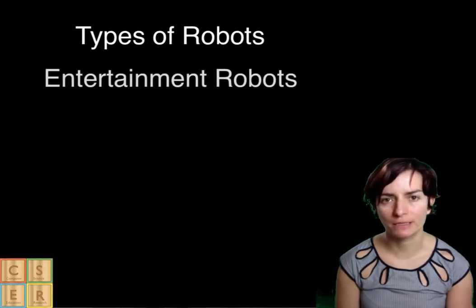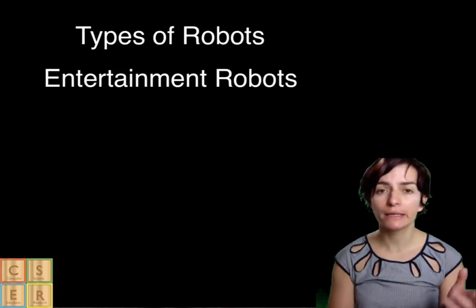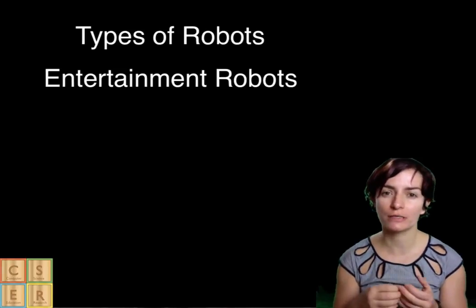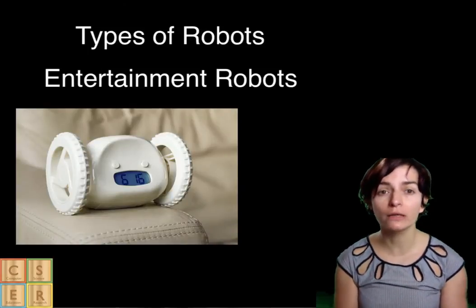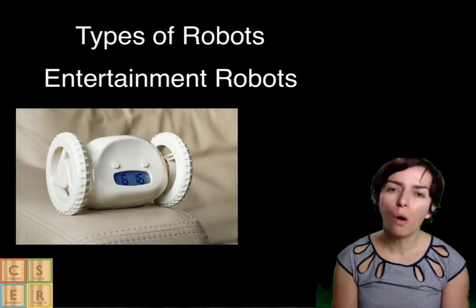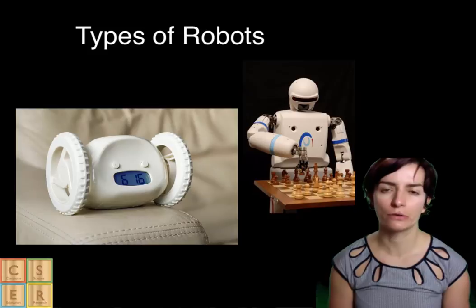Entertainment robots. These are robots used for entertainment. This is a very broad category. It starts with tiny robots, such as robo-sapien or the running alarm clock, and ends with real heavyweights, such as articulated robot arms or humanoid robots used in Japan to greet customers coming into shops.